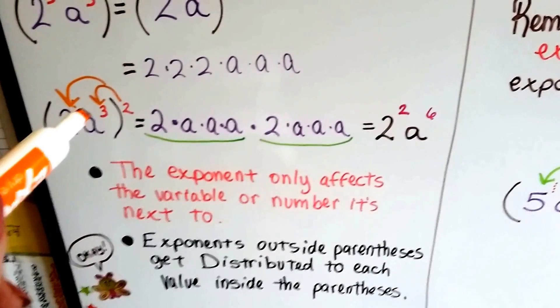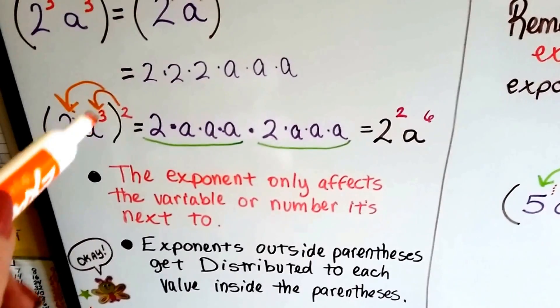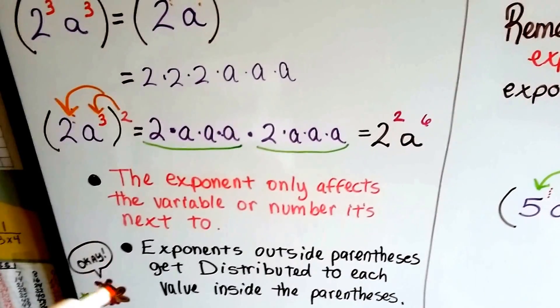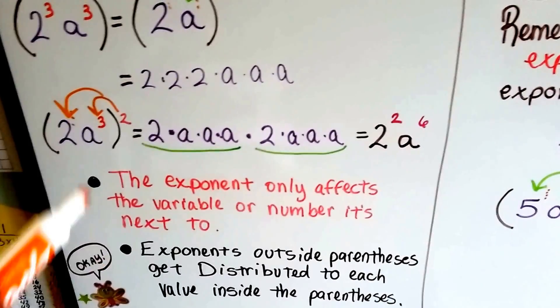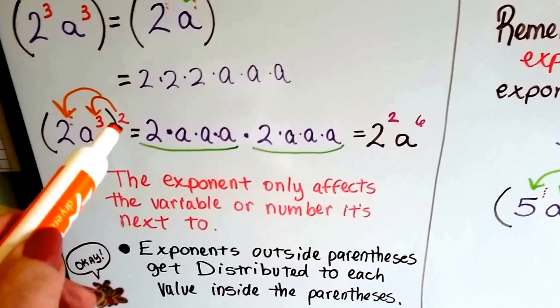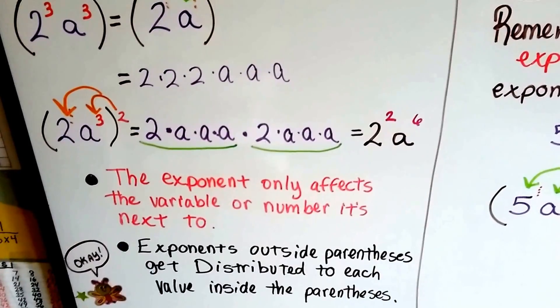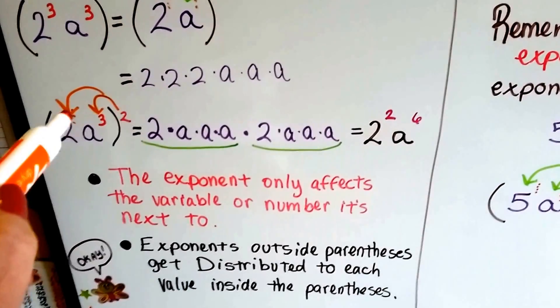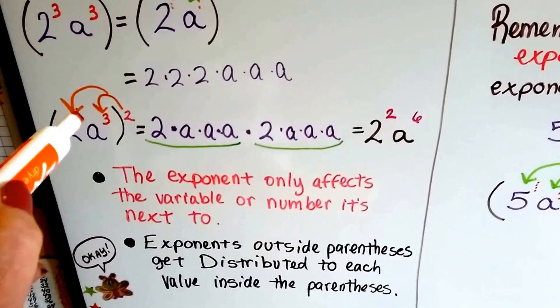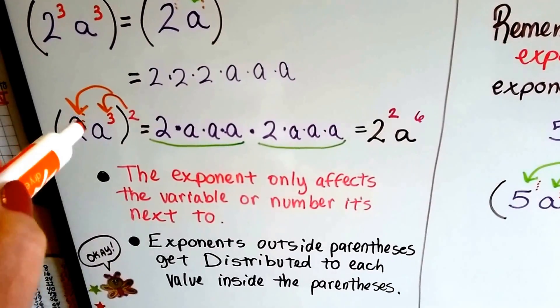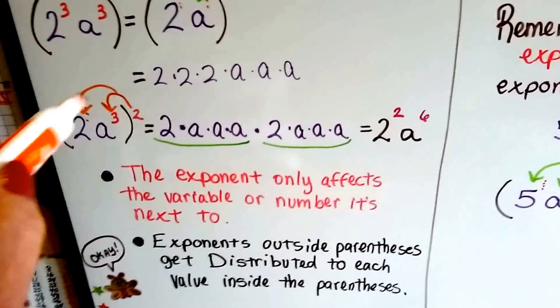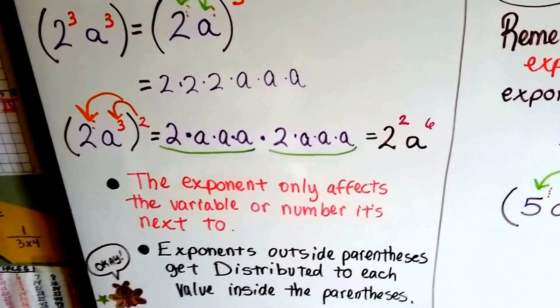Remember the importance of inside versus outside. The exponents on the inside can be multiplied by the one on the outside, and if you don't see an exponent, there's really an invisible one there that we can multiply by that outer exponent.